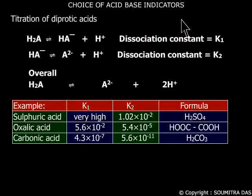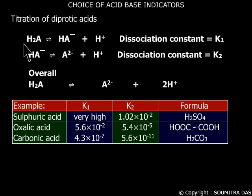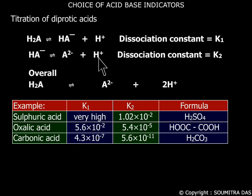Now let us come to diprotic acids. One mole of a diprotic acid has 2 moles of H+ ions which dissociate in steps like this. The hydrogen ions from the dissociation of the first equilibrium influence the second equilibrium to shift towards the left, and very few hydrogen ions are available from the second equilibrium. That is why it is believed that diprotic acids dissociate in steps. In reality, everything depends on the values of K₁ and K₂.